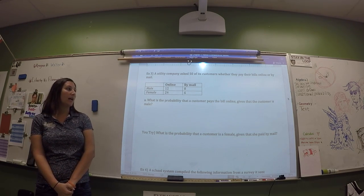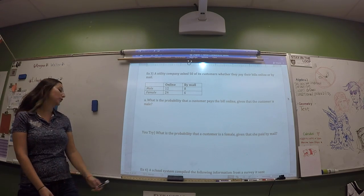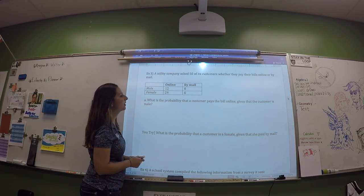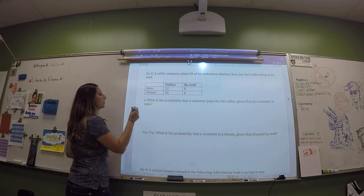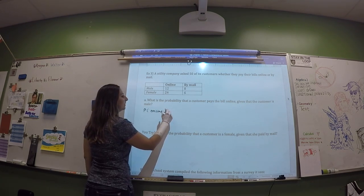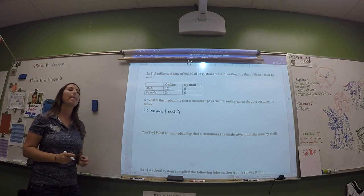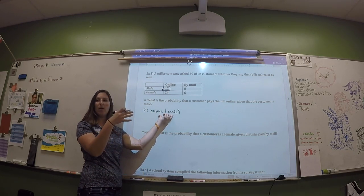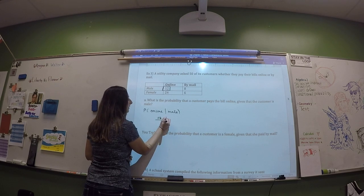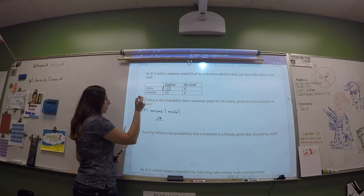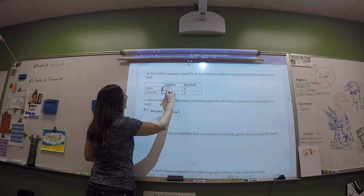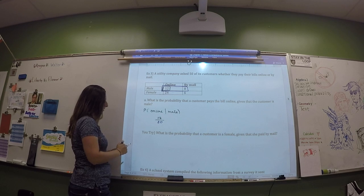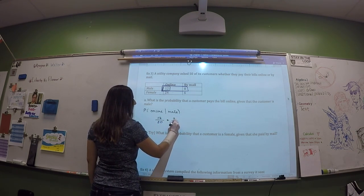What is the probability that a customer pays the bill online given that the customer is a male? Your numerator is 12 — those are the males that paid online, both conditions together. Then you put it over the total males, which we said earlier was 20. So that's going to be 12 over 20, which is three-fifths or 0.6.